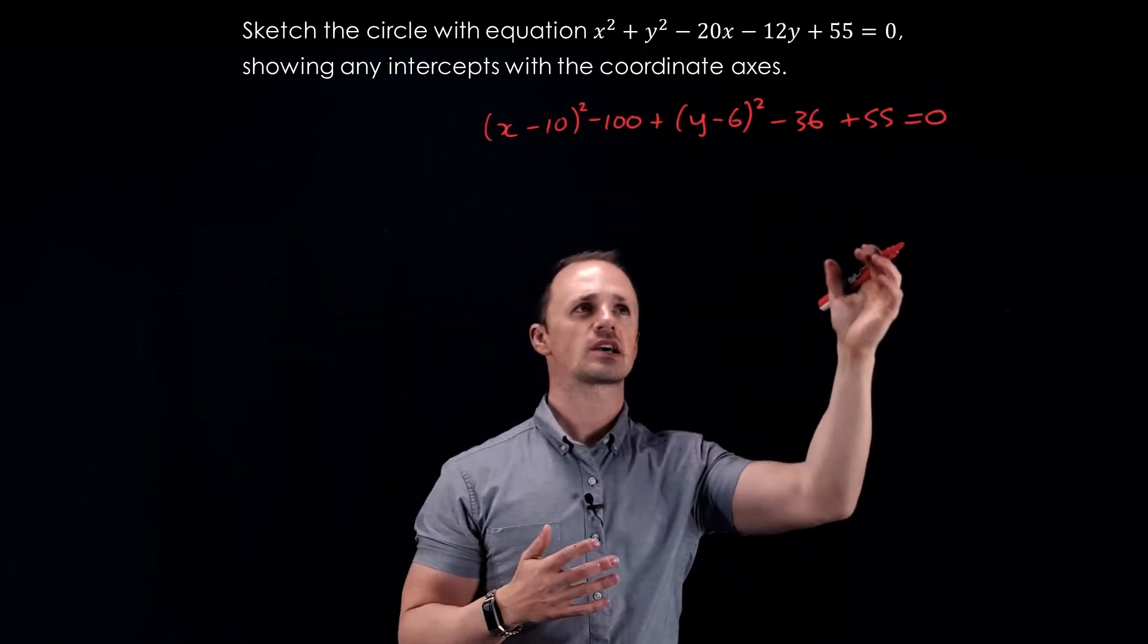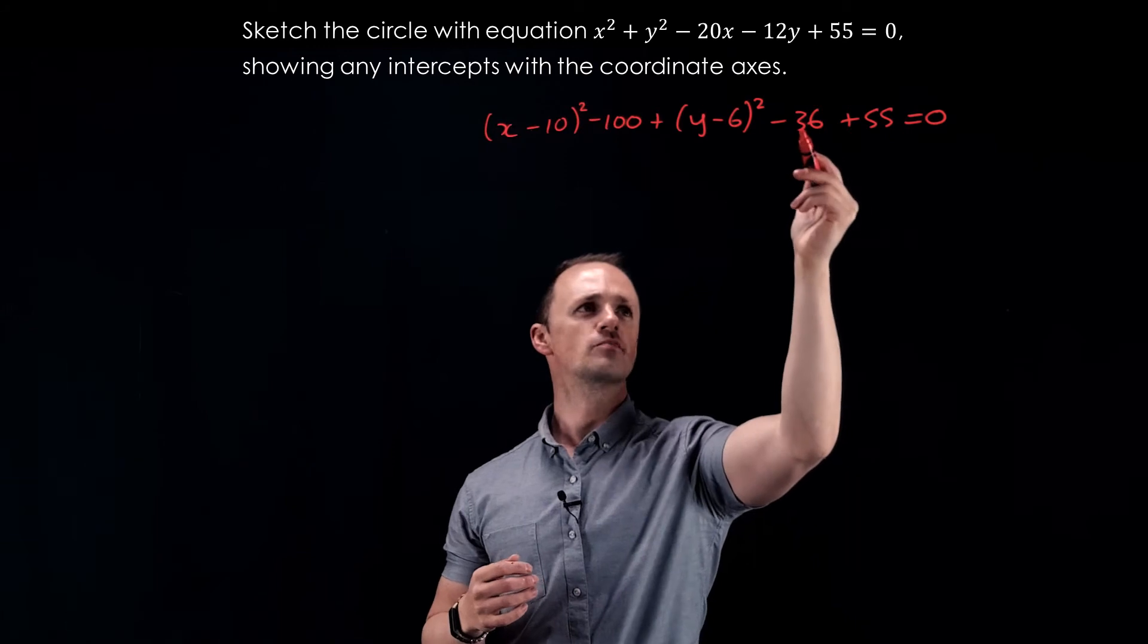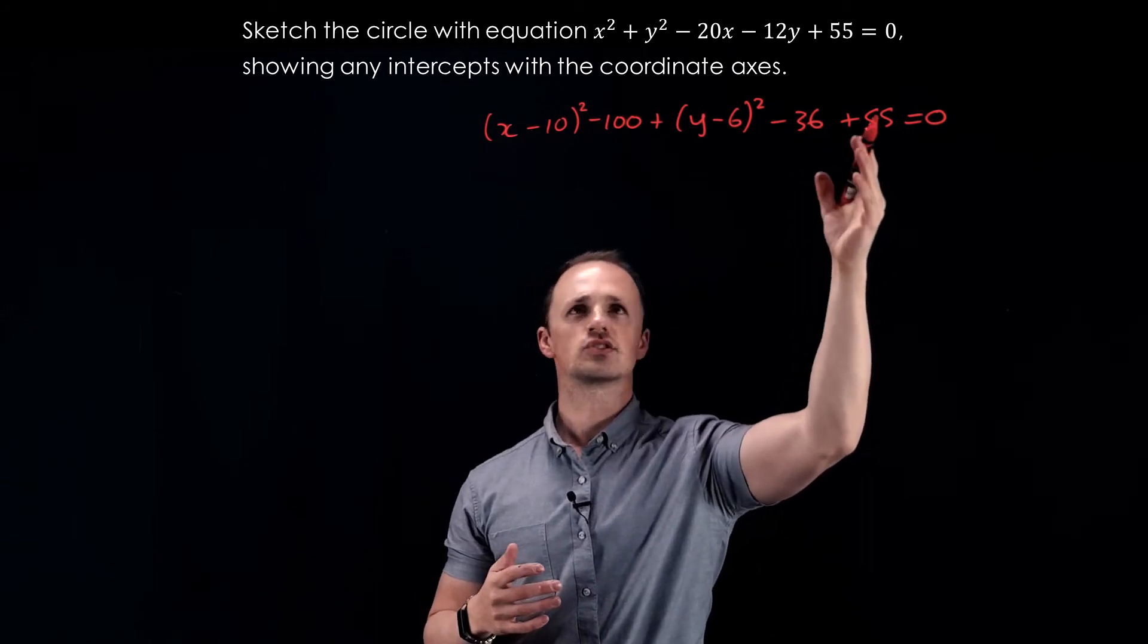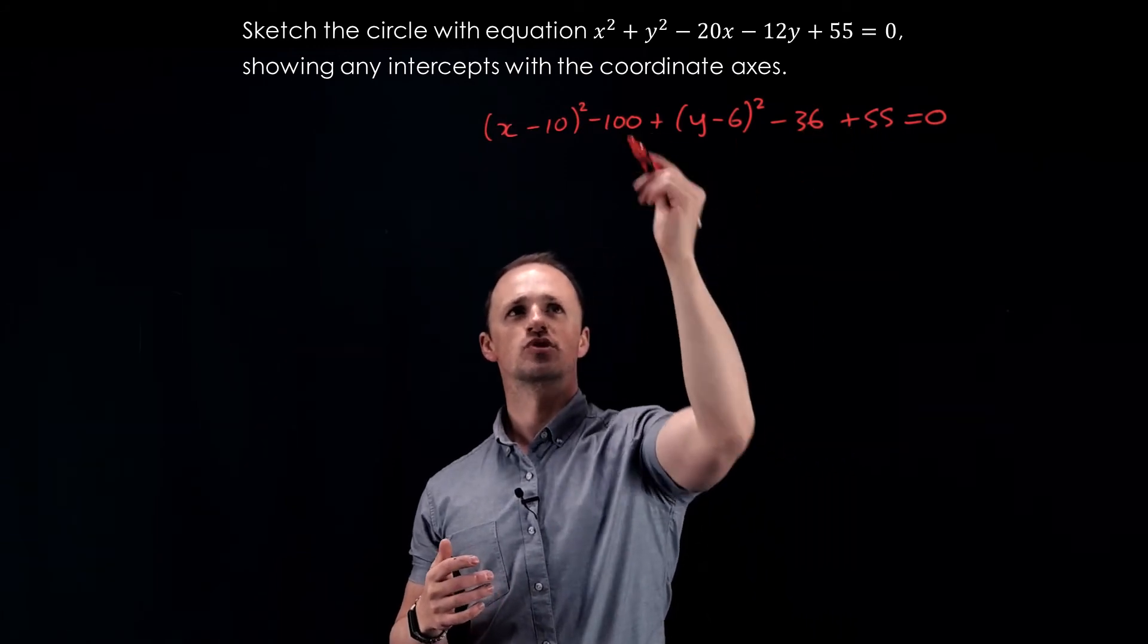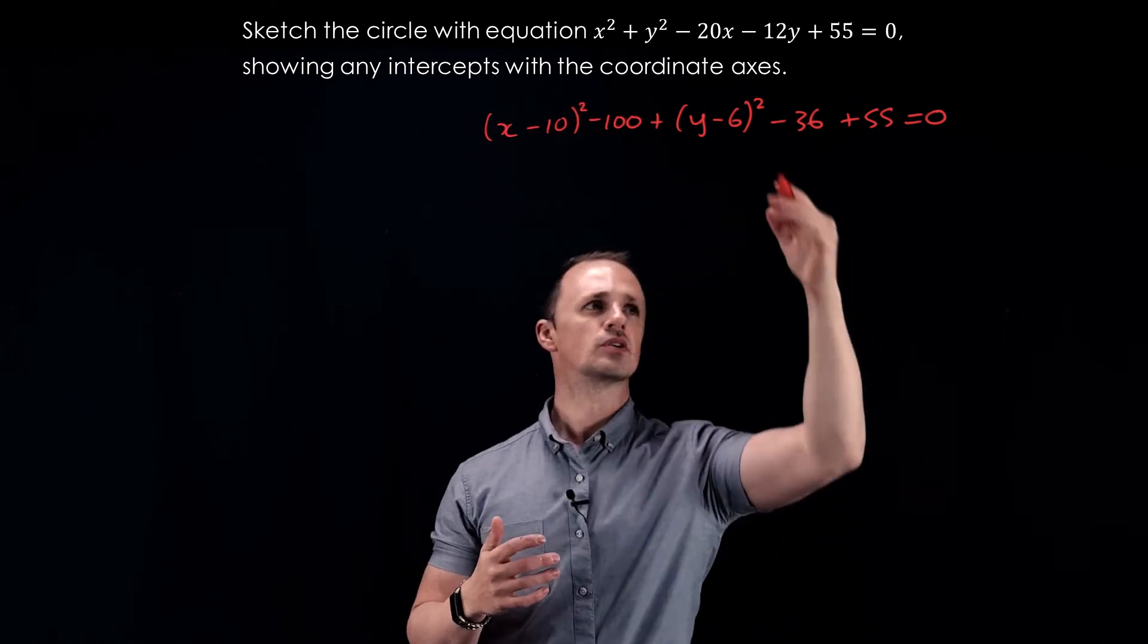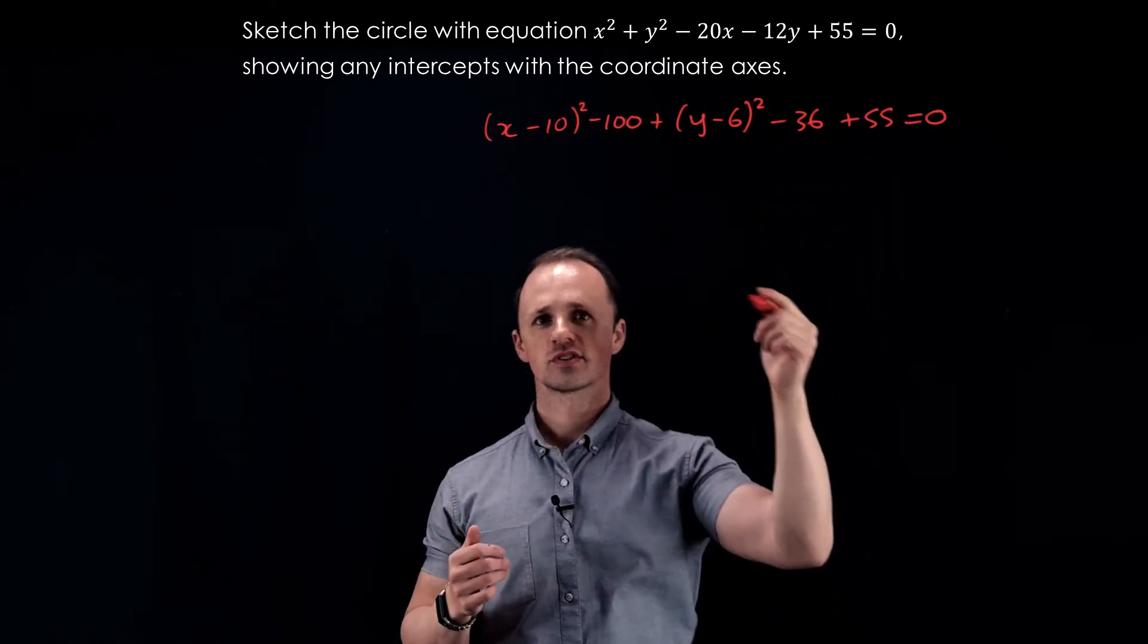So let's collect together all our constants. If we do 55 minus 36, that will give us 19. And then if we subtract 100, that's minus 81. Moving it over to the other side will give us plus 81.